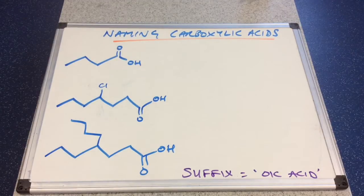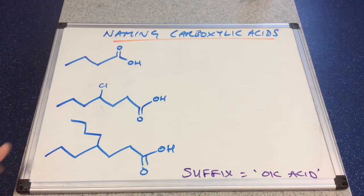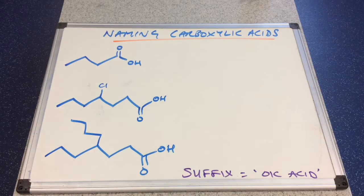In this video I'm going to look at how to name carboxylic acids. We've got three on the board — have a go at naming them. Just a reminder: the suffix, or the ending for carboxylic acids, is 'oic acid'. So their name will end in 'oic acid'.